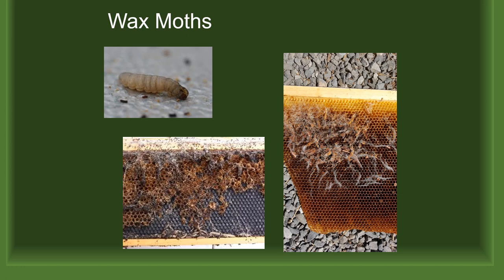Next we'll look at the wax moth. While wax moths don't attack bees directly, their larvae feed on the comb and prefer cells with pollen used to feed the brood. Healthy hives will take care of themselves, but hives that have been abandoned or have improperly stored frames are the target of the wax moth. Depending on how affected the frames are, you can clean them off prior to placing them back into the hive or allow the bees to clean them out in the spring.